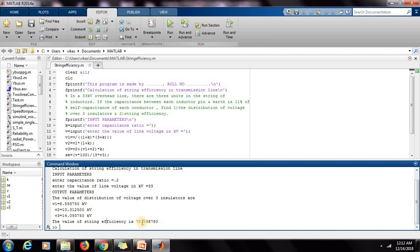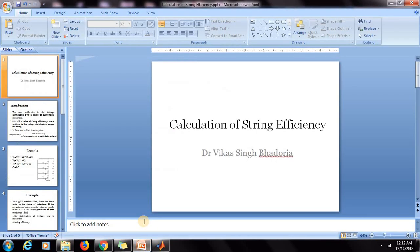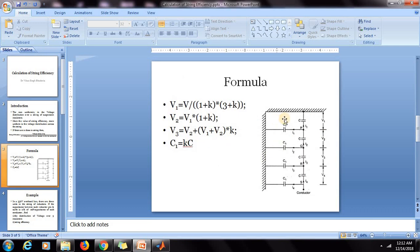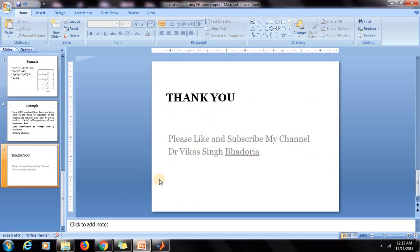And K is the ratio of C1 upon C. So if by any method we can reduce this shunt capacitance, then string efficiency will be more and the voltage distribution will be more uniform. So thanks for watching the video. If you like this, then please subscribe my channel for more videos. Thank you.